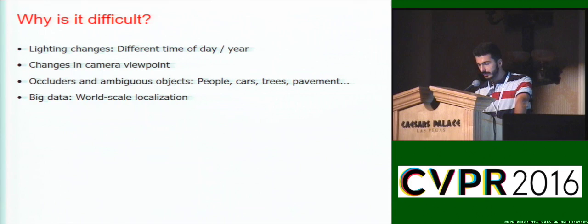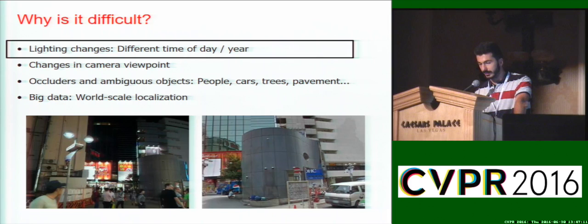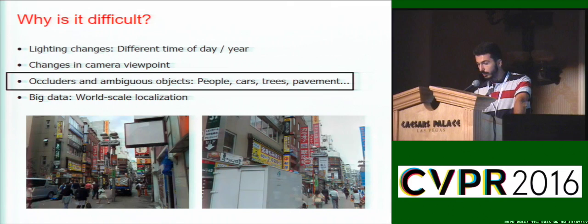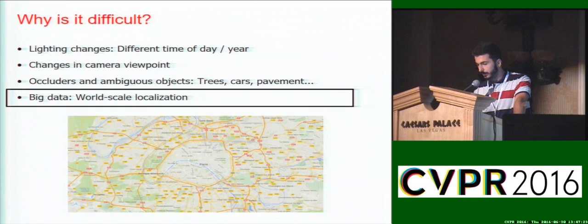Place recognition is a difficult task due to many challenges: lighting changes, such as images taken at different times of the day or the year, changes in camera viewpoint, occluders and ambiguous objects such as people, cars, trees, and the scale of the problem, where we are interested in locating a photo anywhere in the city or the world.